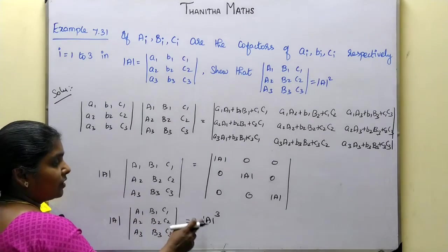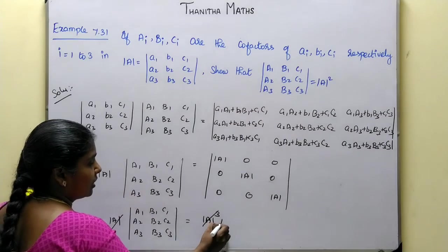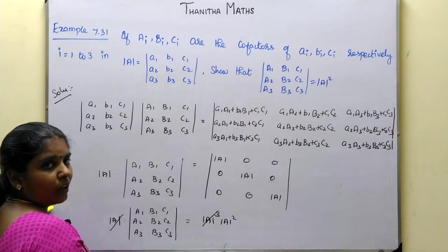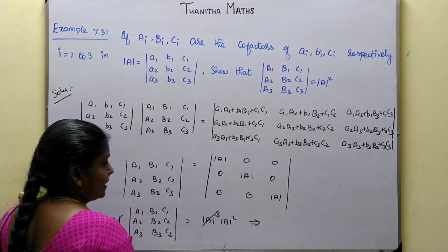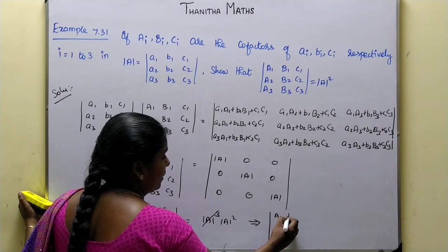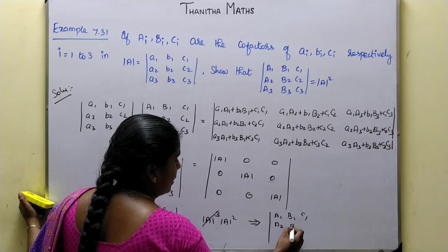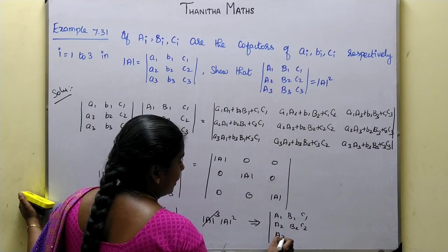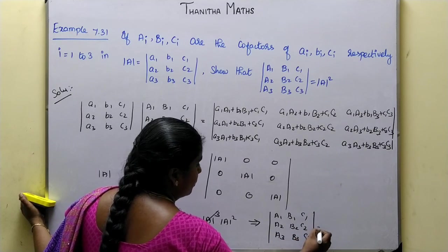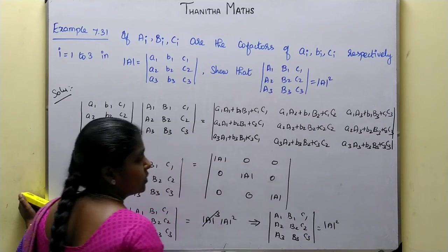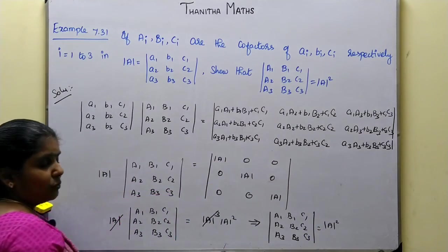Now, what is the determinant of A? The determinant of A whole cube — after cancellation — gives the determinant of A whole squared. So what is the answer? Which implies: determinant of A1, B1, C1, A2, B2, C2, A3, B3, C3 is equal to determinant of A whole squared. Hence proved.